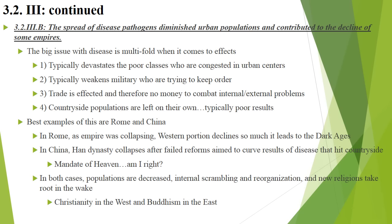Rome — as that empire collapses, the western portion declines really intensely, leading to the Dark Ages. China: the Han dynasty collapses; they tried different reforms to lessen the process, but those things don't go over well, and there are large peasant uprisings and revolts — that's known as the Mandate of Heaven: you get rid of the old ruling class because they've lost favor of the gods. In both cases, populations are decreased a lot, there's internal scrambling and reorganization, and then new religions take root — Christianity in the west, Buddhism in the east.